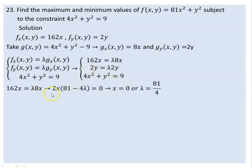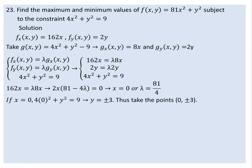From the first equation, taking 2x as a common factor, we get 81 minus 4 lambda equals 0. This equals zero only when x equals 0, or lambda equals 81 over 4.